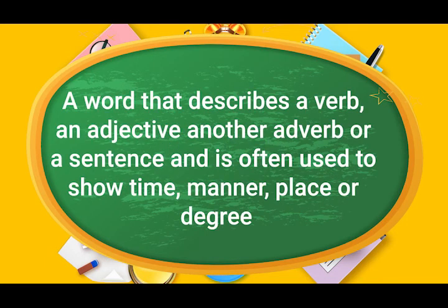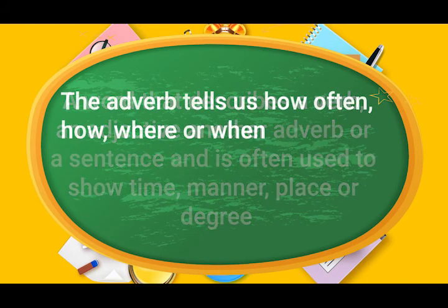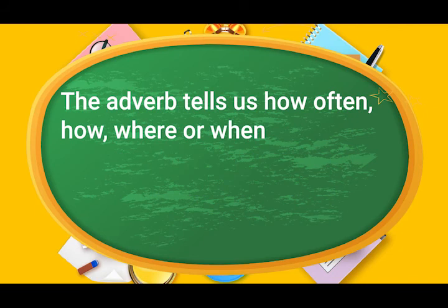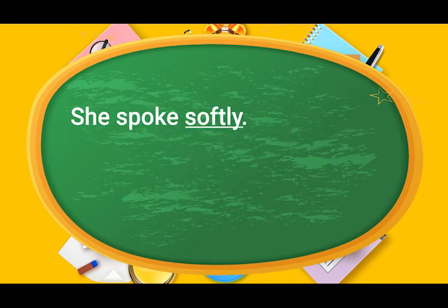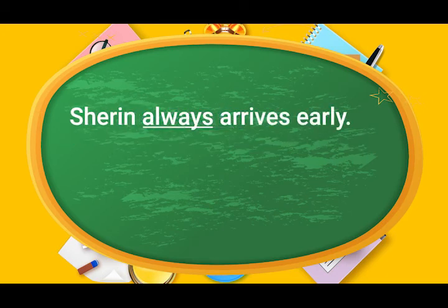Adverb. A word that describes a verb, an adjective, another adverb, or a sentence, and is often used to show time, manner, place or degree. The adverb tells us how often, how, where or when. For example: slowly, quietly, quickly, sweetly. She spoke softly. Sharon always arrives early. In the above sentences, the adverbs are softly and always.